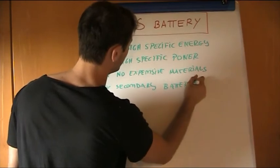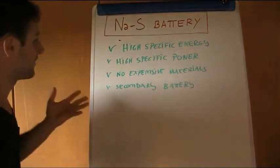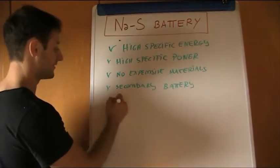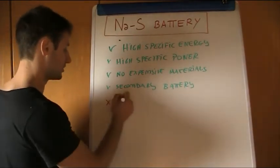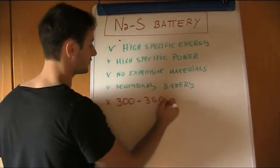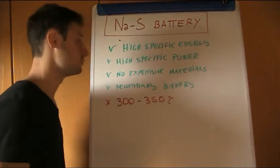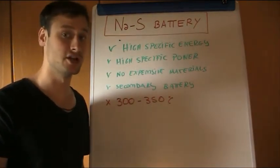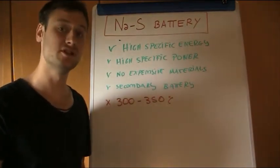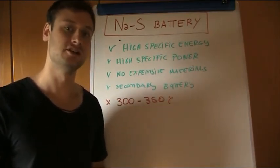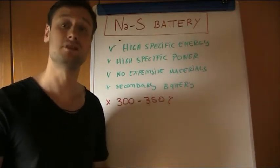But together with the most important advantages, we have even some problems. For instance, we have the fact that this battery works only in a temperature range that is between 300 and 350 degrees Celsius. In order to make sodium useful for the workings of the battery, it should be melted.